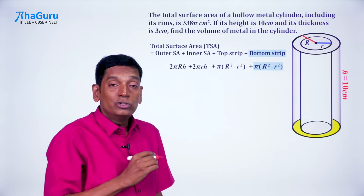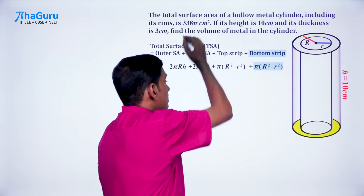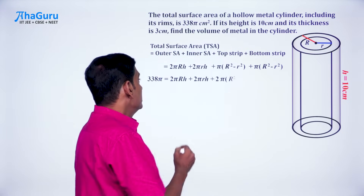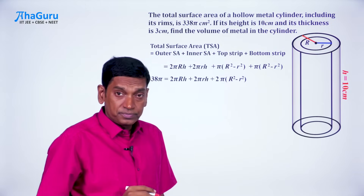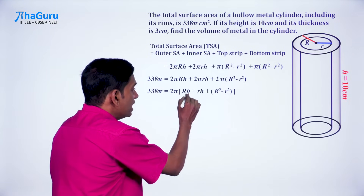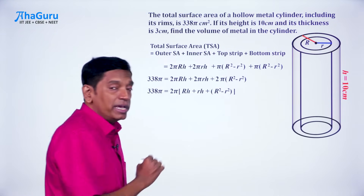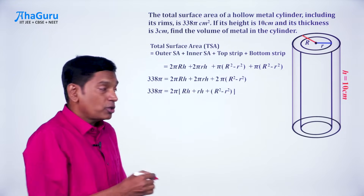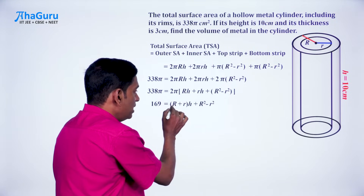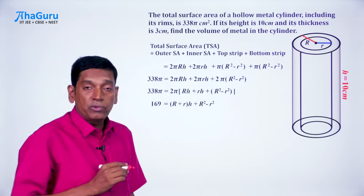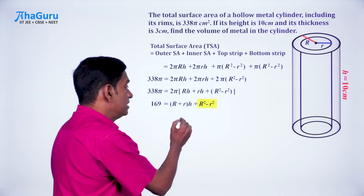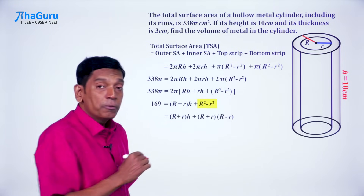So this is the expression for the total surface area. We are given that this total surface area is 338π. We can take 2π as common and, since pi cancels and 338 divided by 2 is 169, we get 169 = h(R + r) + (R² - r²). We can apply the identity and write R² - r² as (R + r)(R - r).